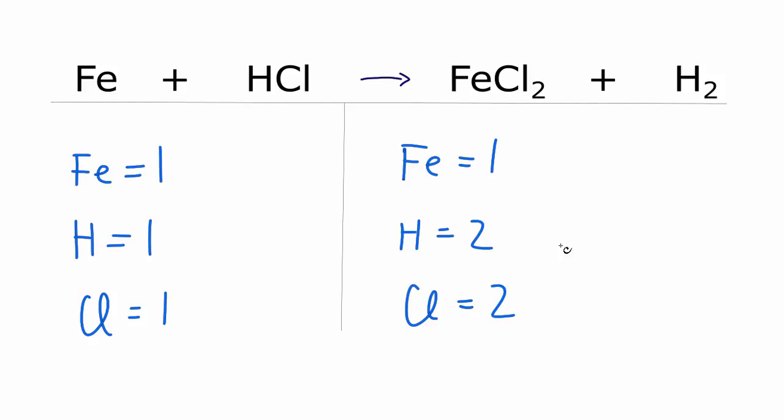So in this case we want to have two hydrogens and two chlorines on the reactant side to balance out the two hydrogens and chlorines here. If we put a coefficient in front of this, the two will apply to the hydrogen and to the chlorine.